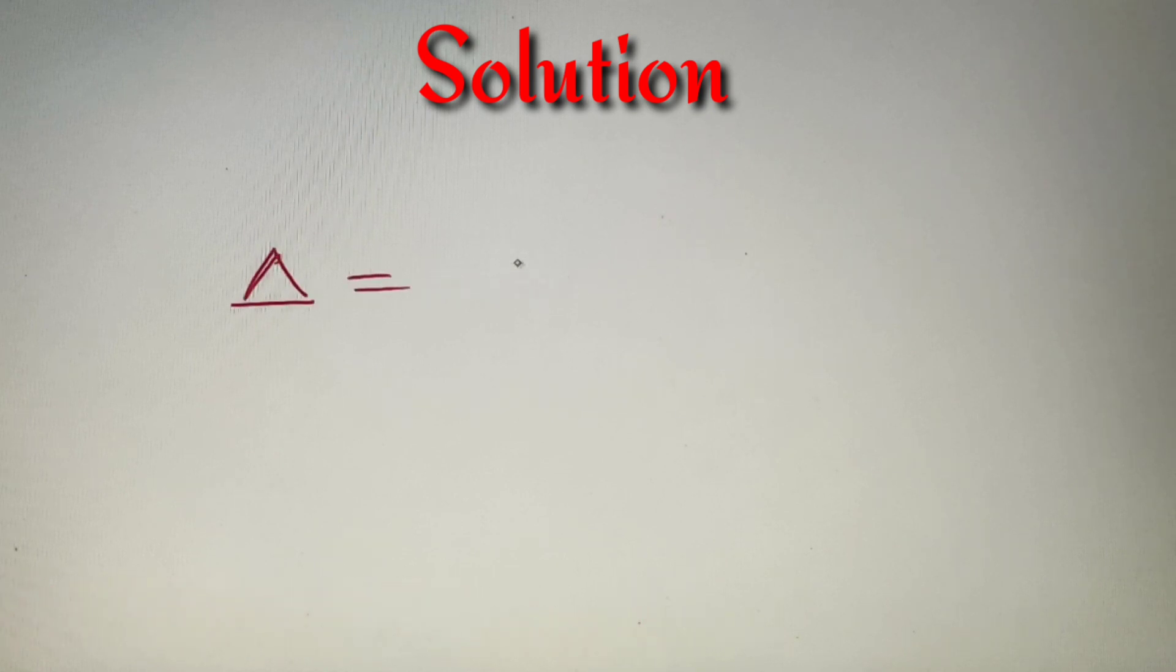The area of an equilateral triangle is equal to abc divided by 4R where abc are the sides of the equilateral triangle. Now if abc are equal then we can take it as a³ where a is the side of the equilateral triangle and R is the circumradius.